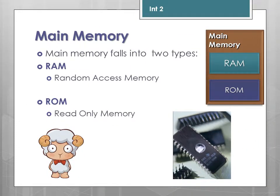Main memory falls into two types: RAM, which is random access memory, and ROM, which is read only memory — nothing to do with sheep, by the way.